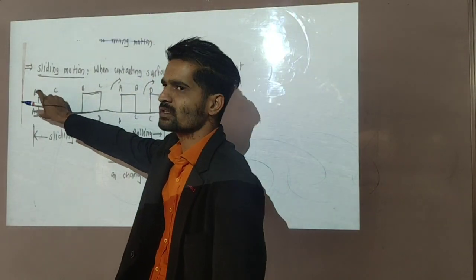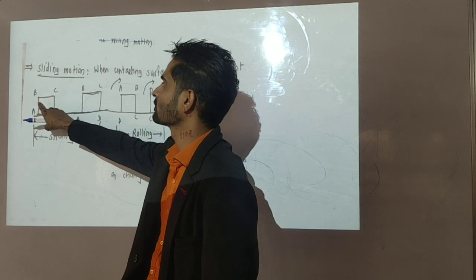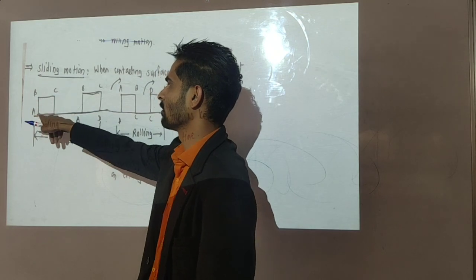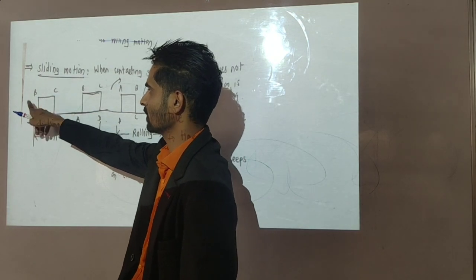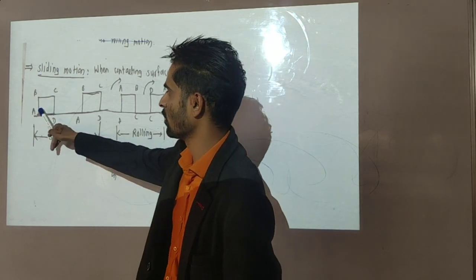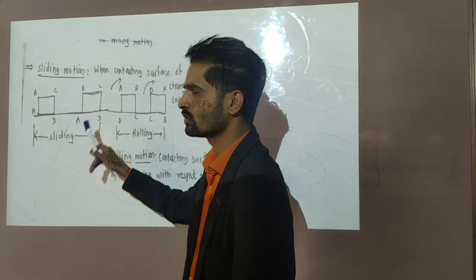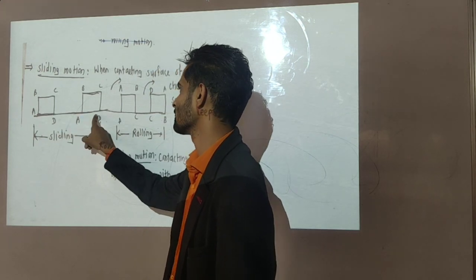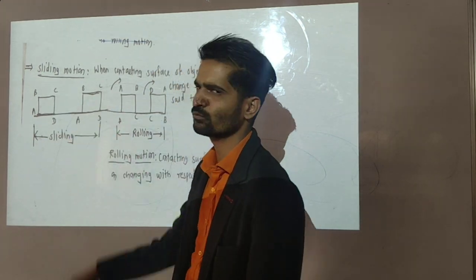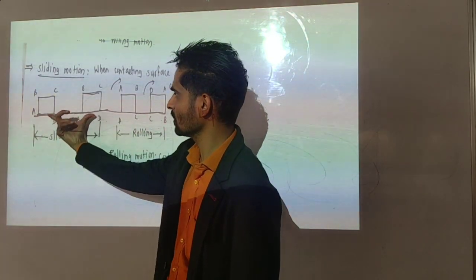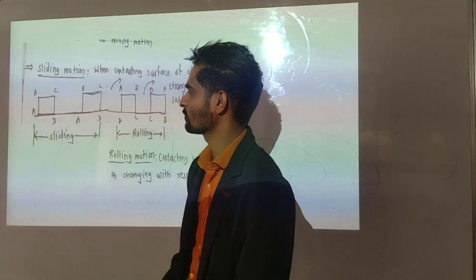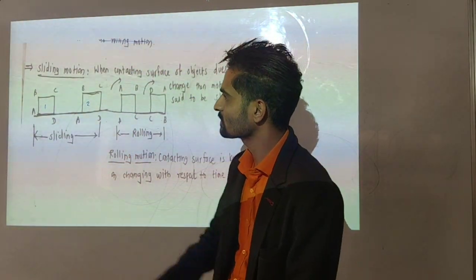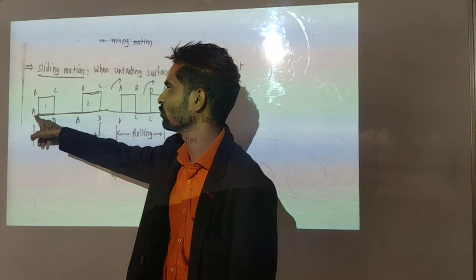Suppose a block is there. I name it as ABC — consider the four corners of the block as particles A, B, C. When this block is moved on the ground, point A remains at the same relative position, point B at the same position, C at the same position. From position one to two, there is no change of contact properties.